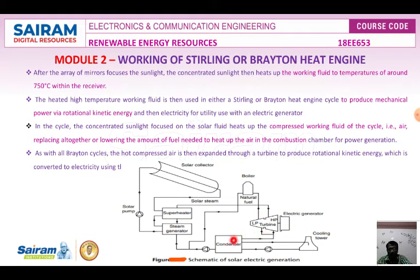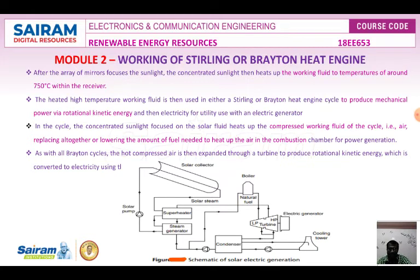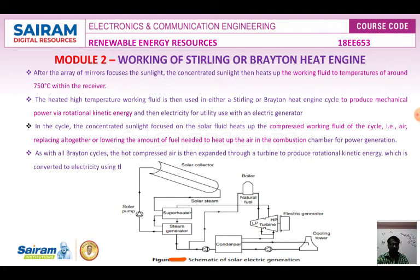The same steam is converted back into water in the condenser, then passed to the steam generator, which allows water to flow through the solar collector again. During days when the sun is not shining, natural fuels are used to boil water in the boiler and pass steam to the turbine for electricity generation. After an array of mirrors focuses the sunlight, the concentrated light heats the working fluid to around 750°C within the receiver. The heated high-temperature working fluid is used in either the Stirling or Brayton heat engine system to produce mechanical power via rotational kinetic energy, then electricity via electric generators.